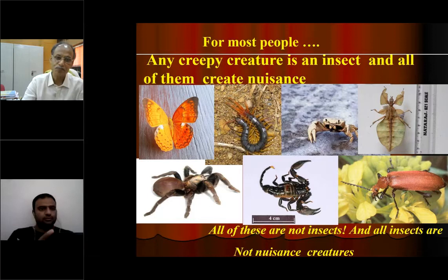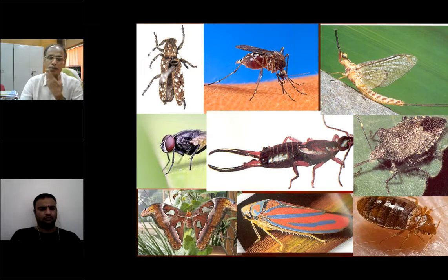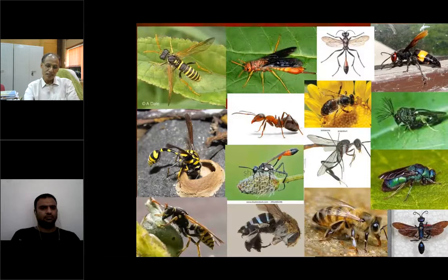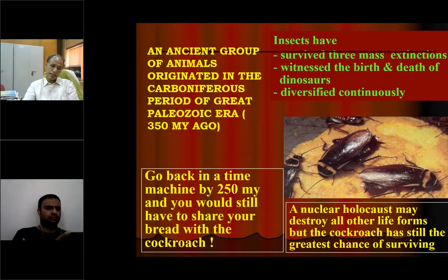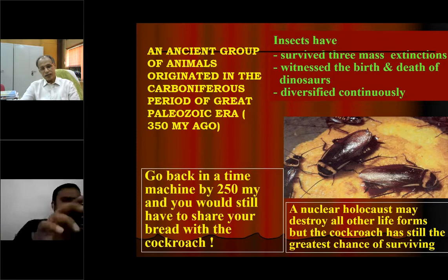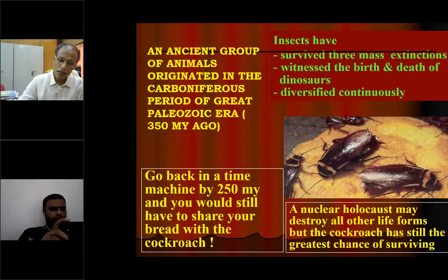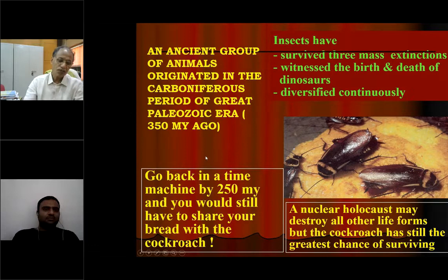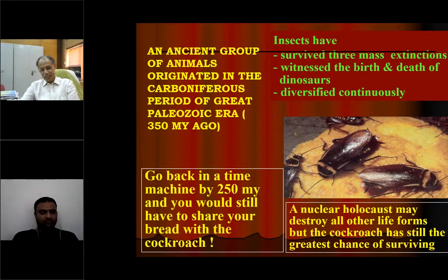I will show the diversity of the insect world. You may be familiar with some groups and not others. Insects are an ancient group of animals, originating in the Carboniferous period of the great Paleozoic era. Around 350 million years ago, insects originated on this earth. They then diversified and occupied all terrestrial ecosystems. They have survived three mass extinctions. Insects witnessed the birth and death of dinosaurs. If you go back 250 million years, you would still have to share your bread with a cockroach.